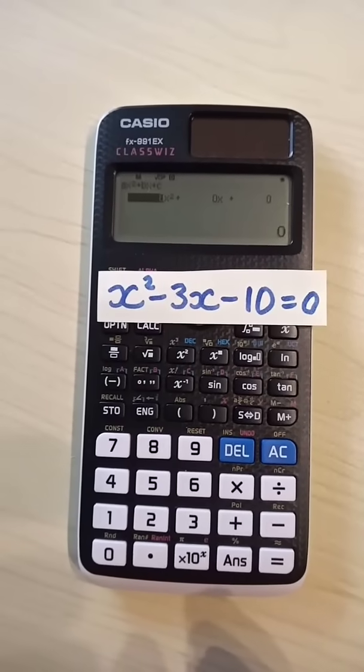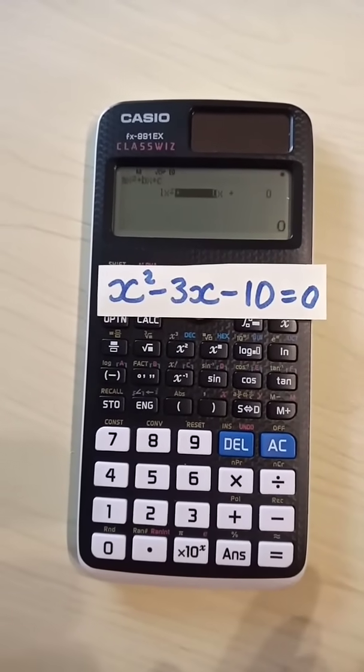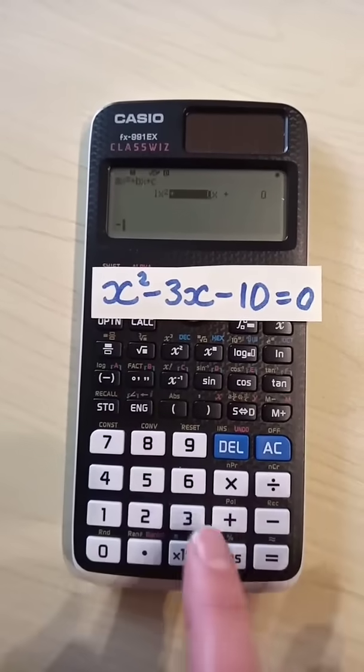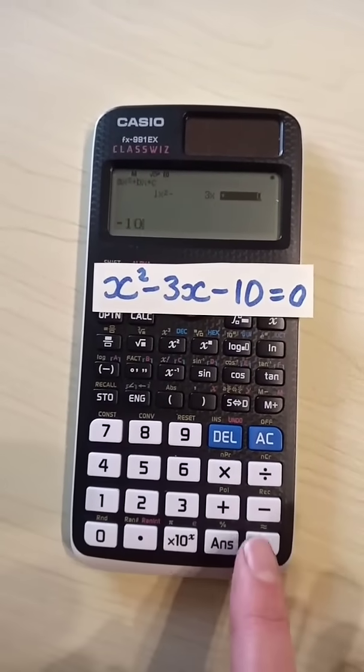Input coefficients of your equation. A is 1, so type 1 equals. B is negative 3, type negative 3 equals. C is negative 10, type in negative 10 equals.